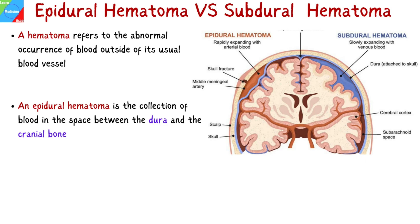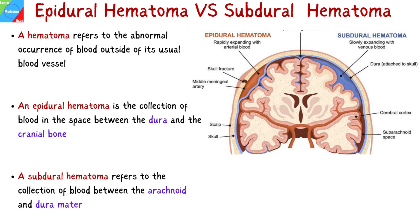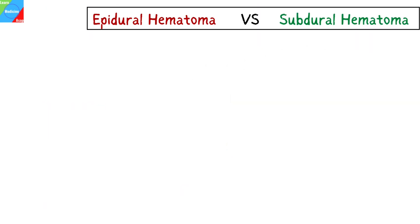An epidural hematoma is the collection of blood in the space between the dura and the cranial bone. A subdural hematoma refers to the collection of blood between the arachnoid and dura mater. Now let's differentiate between these two types of hematomas in detail.